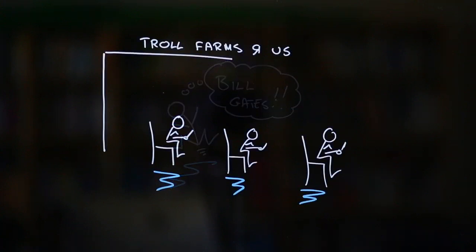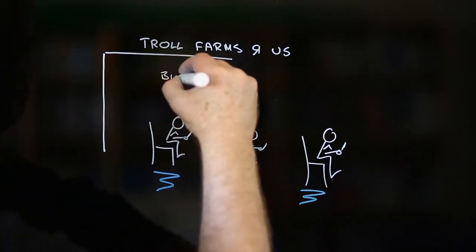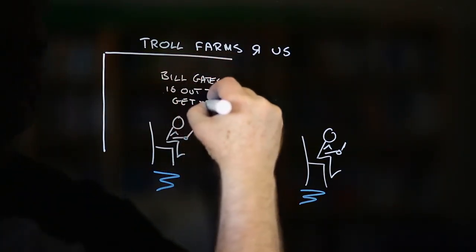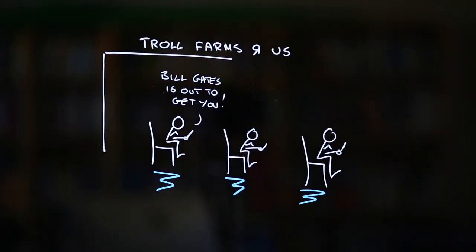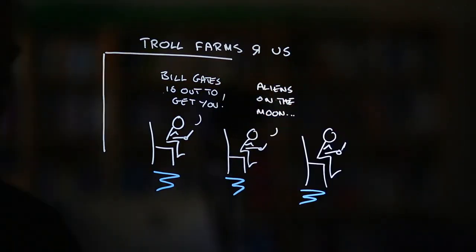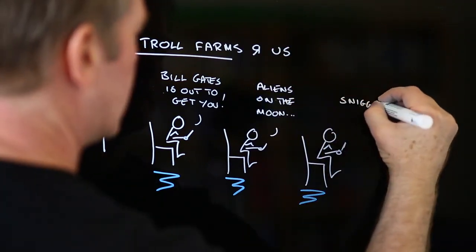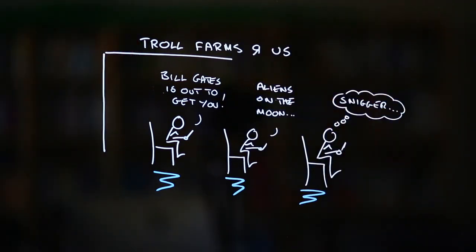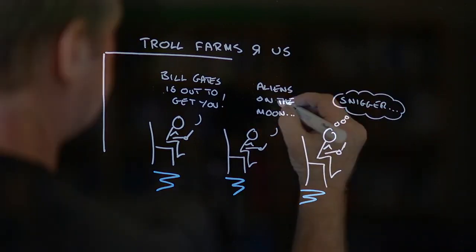However, I have to admit that if asked to choose between Bill Gates being a criminal mastermind bent on world domination or COVID being part of an evil plot thought up by aliens living on the dark side of the moon, I'd go with the aliens. Trust me on this. Bill is not out to get you. And finally.